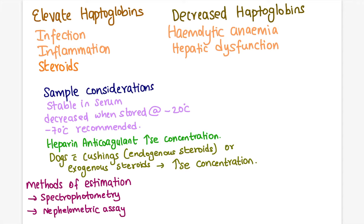Haptoglobin is severely decreased in hemolytic anemia and hepatic dysfunction. In hemolytic anemia, due to excessive free hemoglobin, the available haptoglobin in the circulation is consumed by binding, reducing its levels. In hepatic dysfunction or destruction of hepatocytes, haptoglobin is not produced in sufficient amounts, so levels are reduced.